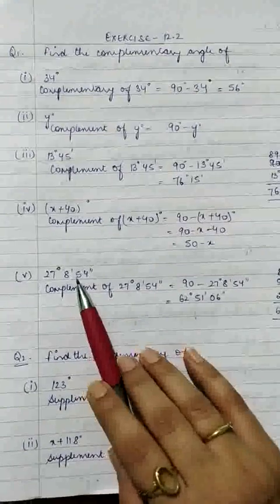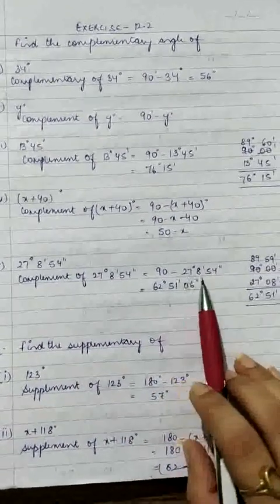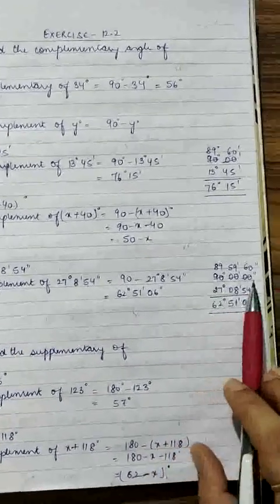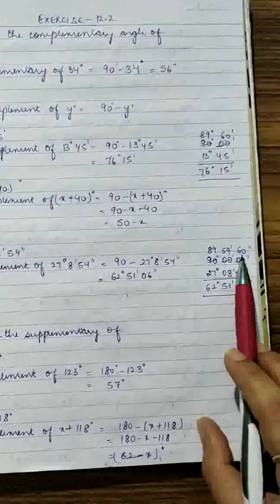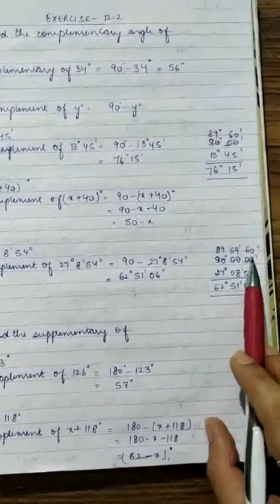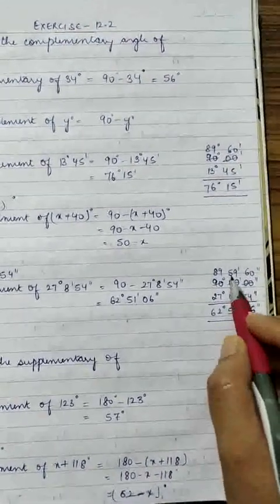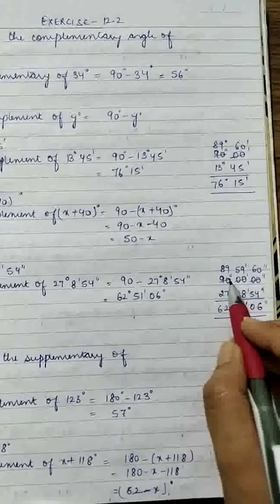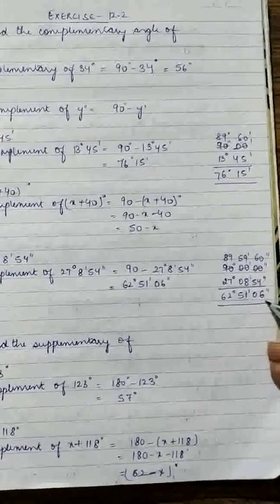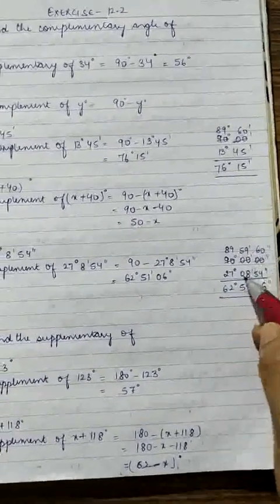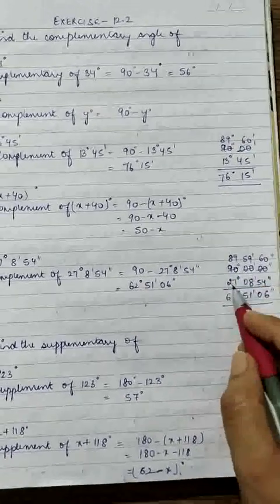Complementary angle of 27 degrees 8 minutes 54 seconds. So 90 minus 27 degrees 8 minutes 54 seconds. Borrow 1 minute = 60 seconds; 60 minus 54 is 6 seconds. After borrowing, 59 minutes remain; 59 minus 8 is 51 minutes. Then 89 minus 27 is 62 degrees. Answer: 62 degrees 51 minutes 6 seconds.